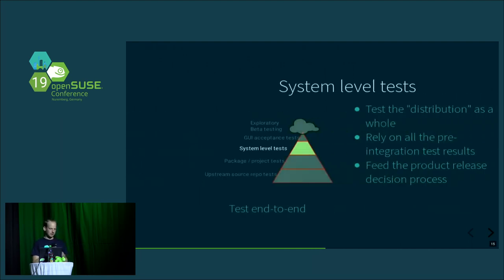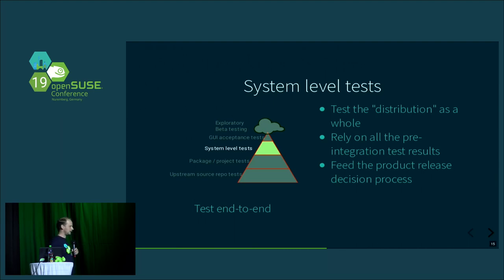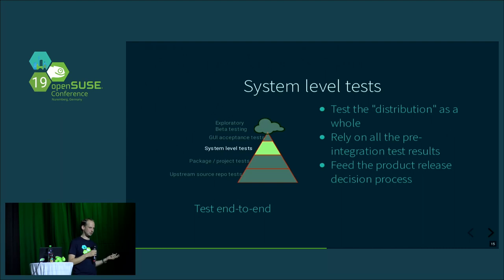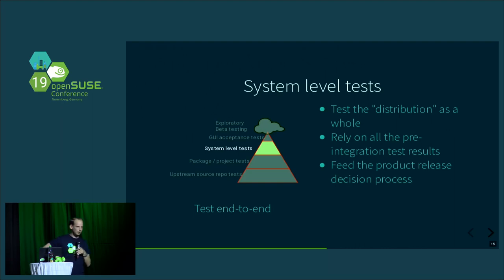The next level is system level tests — testing end-to-end the whole operating system, testing the distribution as a whole. We should rely here on all pre-integration test results from before, then ask what else could go wrong after accepting a package. A good example is booting the system or conducting an installation — something you cannot do when talking about a single package, but many things can go wrong: dropping the kernel, config files relying on a different format, and so on.